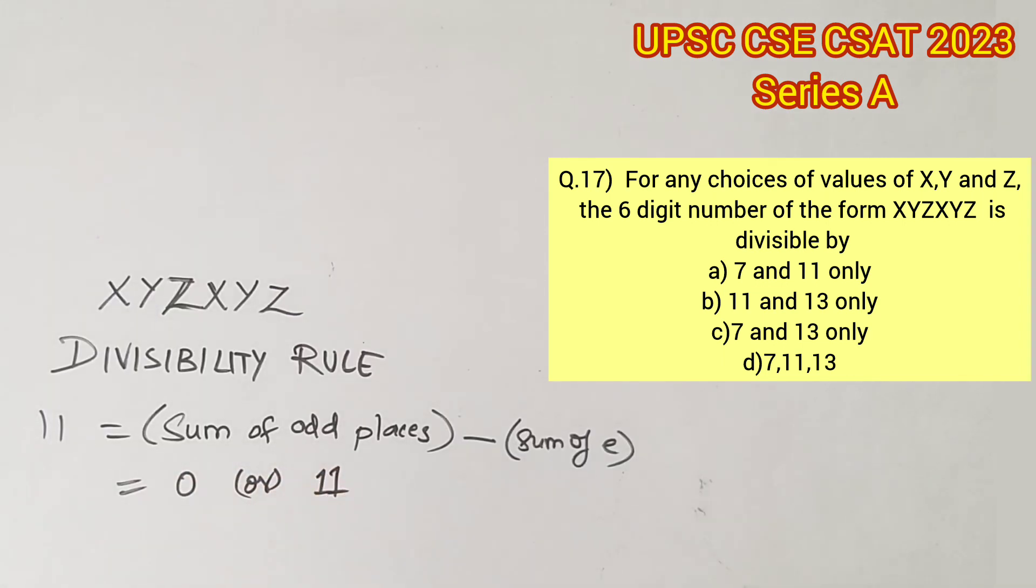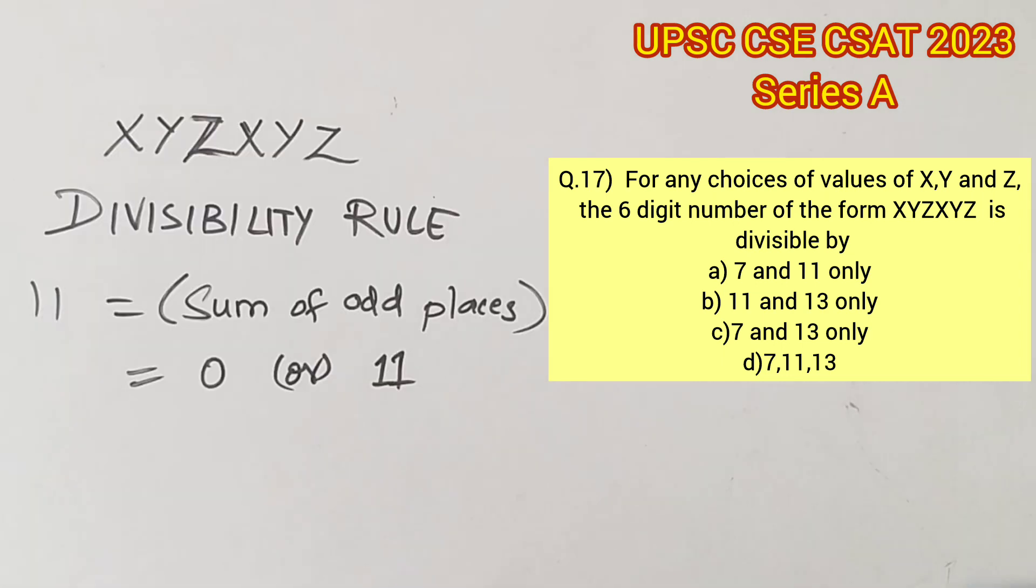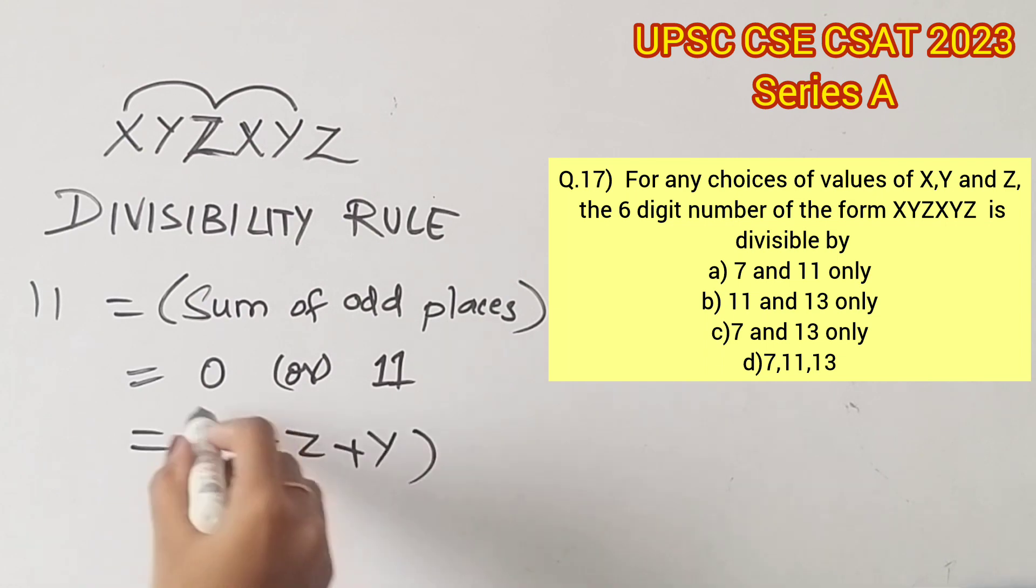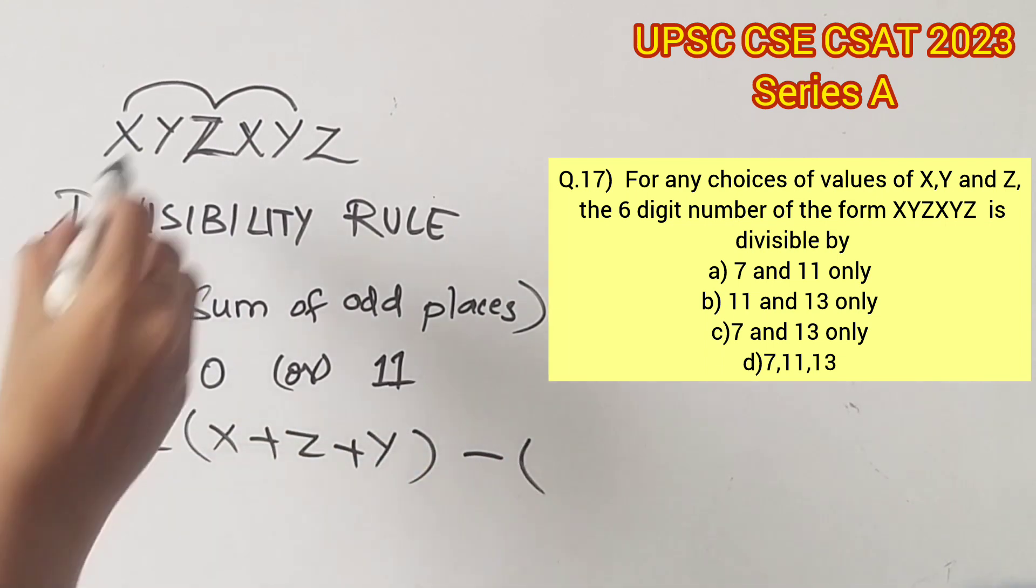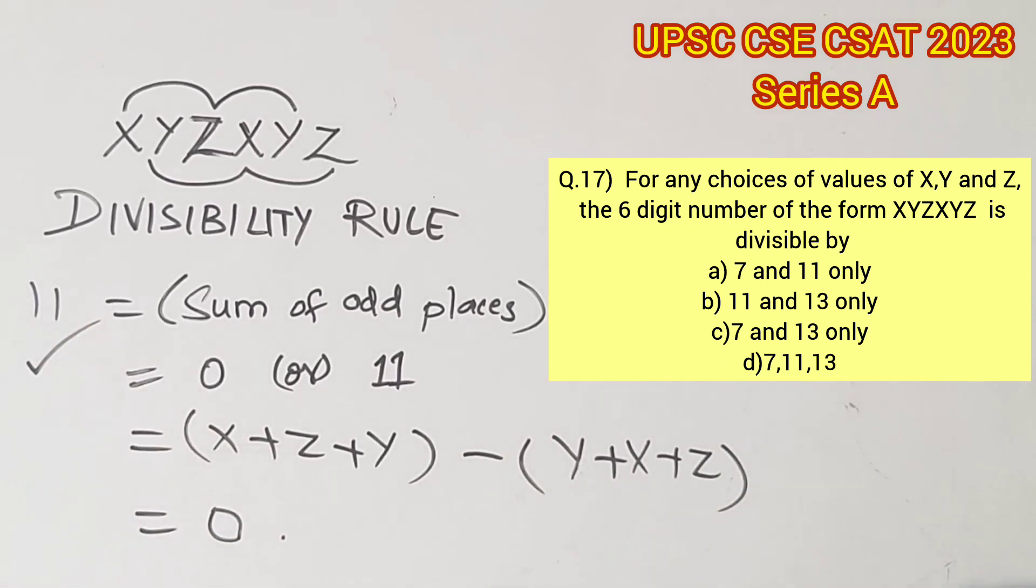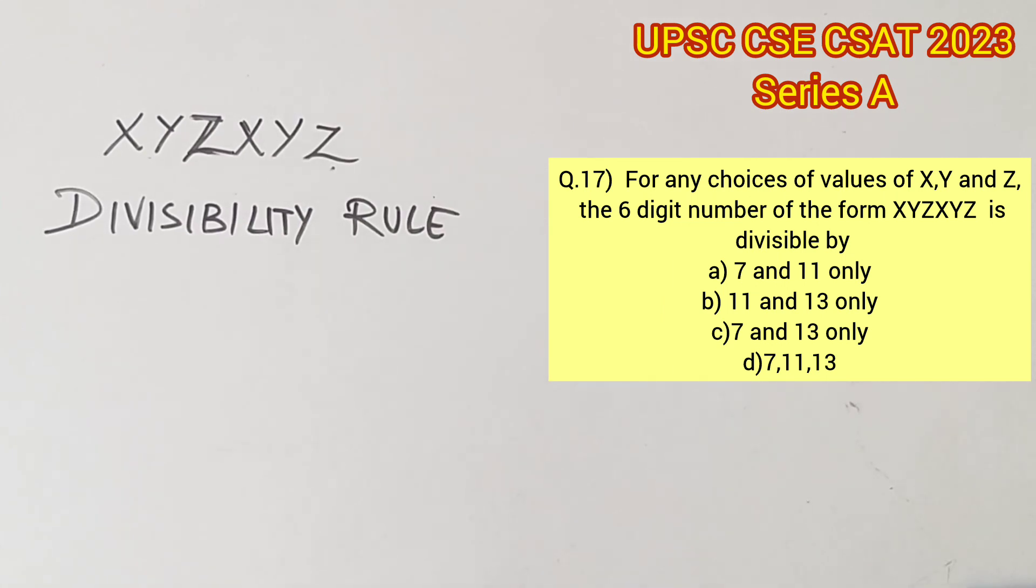So now, if you notice, in this six-digit number the odd places are X, Z, and Y. So X plus Z plus Y minus the even places, which are Y, X, and Z. Now this equals 0, which means the given six-digit number is divisible by 11. Let us check for 7 next.